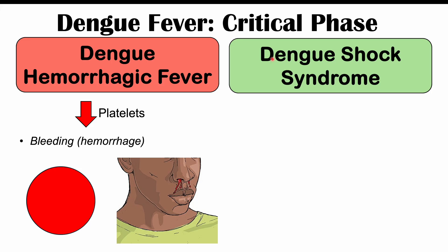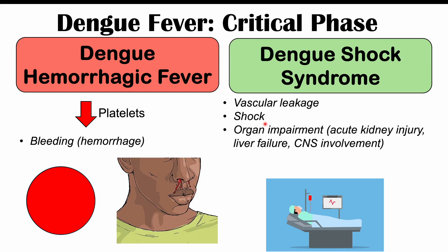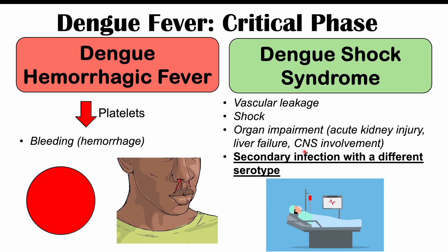The second severe clinical presentation is dengue shock syndrome, where there is vascular leakage — the vessels become leaky. This can lead to hypovolemic shock due to a loss of fluids into the interstitial space, causing organ impairment from inadequate blood pressure and blood flow. This can result in acute kidney injury, liver failure, and impaired central nervous system functioning. Dengue shock syndrome is more likely to occur with a second or third infection, especially with a different serotype.